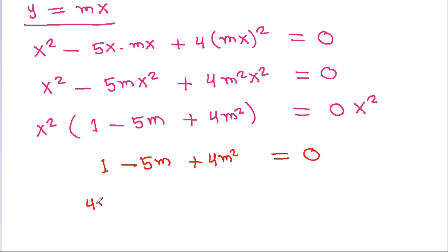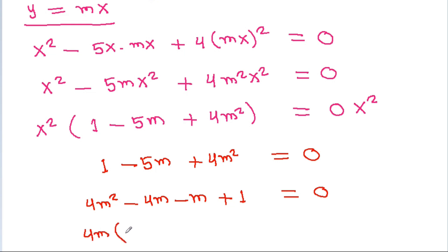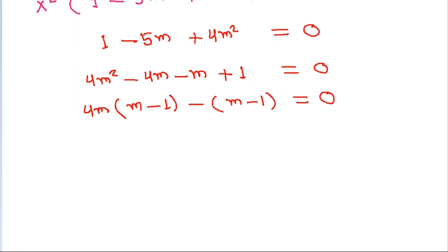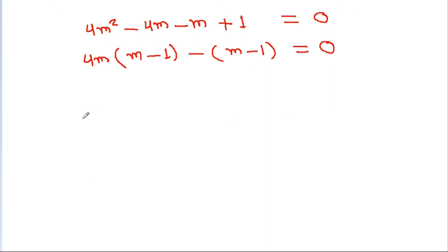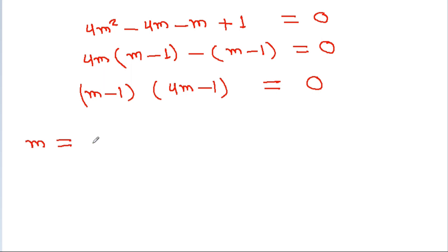We rewrite it as 4m squared minus 5m plus 1 equals 0, which factors as 4m squared minus 4m minus m plus 1. Taking 4m common gives 4m times (m minus 1), and taking minus common gives minus (m minus 1) times (4m minus 1) equal to 0. So m equals 1 and m equals 1 by 4.